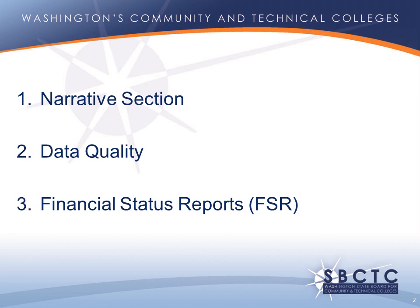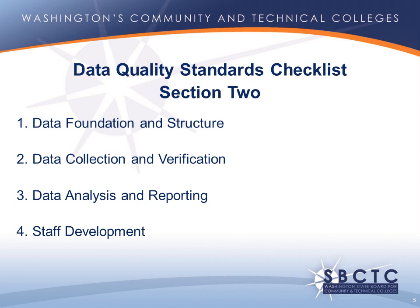Now let's take a few minutes to look at each of the additional sections. The Data Quality Standards Checklist identifies the policies, processes, and materials that states and local programs must have to collect valid and reliable data for NRS reporting. These standards define the characteristics of high-quality data collection systems. In this section, you will use the checklist to rate your implementation of the four NRS data quality standards for CASAS assessment, Waivers Plus data collection, and reporting procedures and local data analysis.